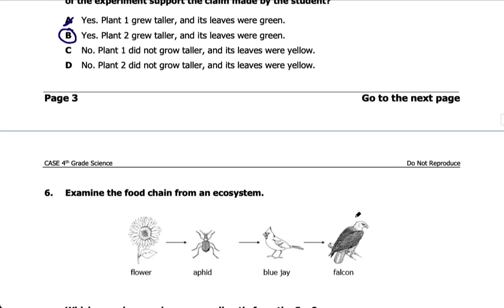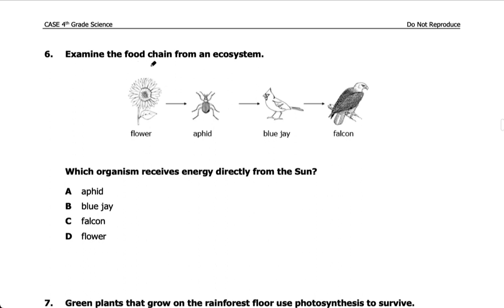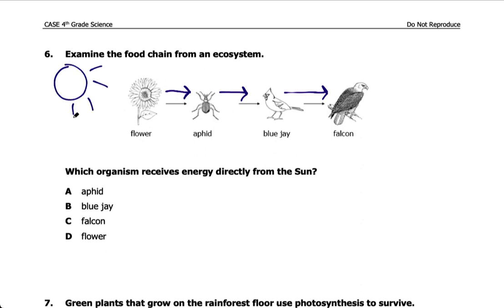Number six: examine the food chain — flower, aphid, blue jay, falcon. The arrows show how energy flows: flower energy flows to the aphid, aphid's energy flows to the blue jay, blue jay's energy flows to the falcon. Which organism receives energy directly from the sun? The only thing that gets its energy from the sun is a producer, which is a plant. So the answer is D — the flower.